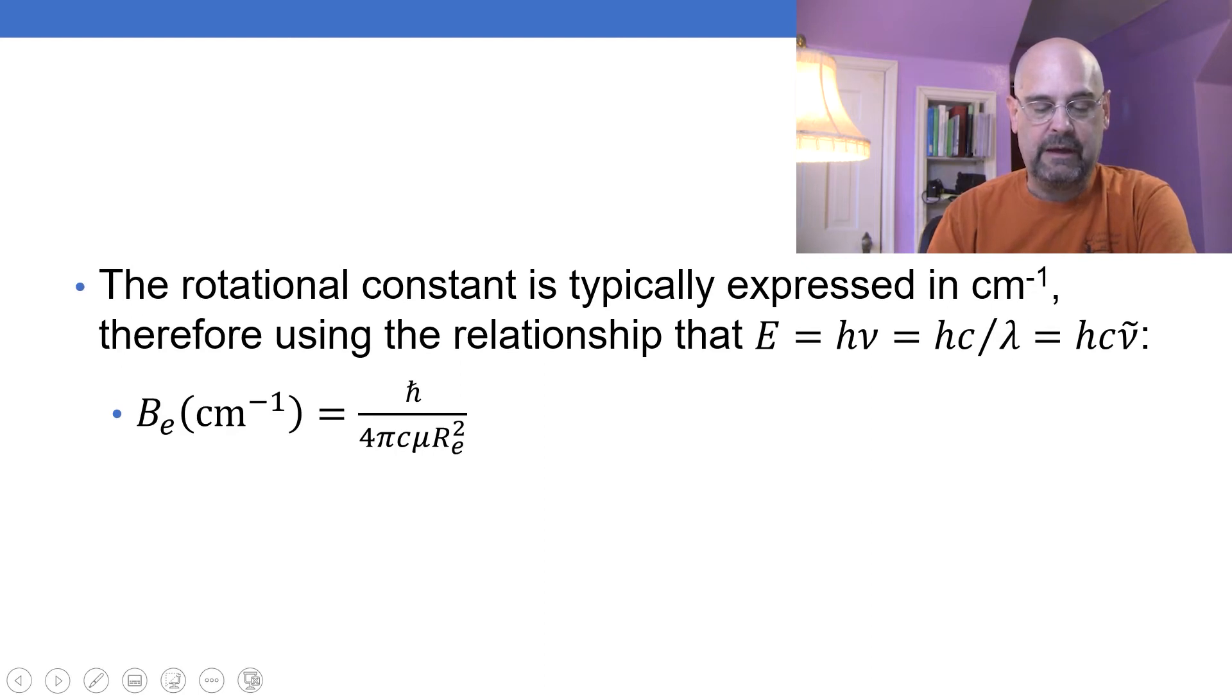Now, rotational constants typically expressed in wave numbers, so if I multiply this by h c. E is equal to h nu is equal to h c divided by lambda is equal to h c nu tilde. What I have to do is I have to divide the energy by h c, and now what I get is that h bar squared over 4 pi c mu r_e squared, this of course is the moment of inertia.